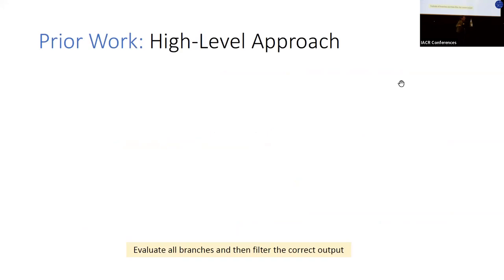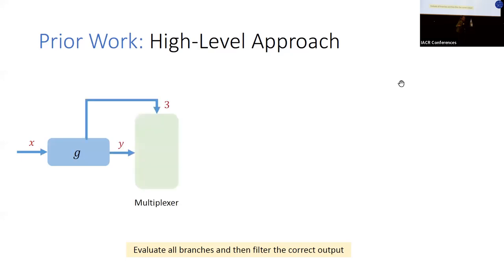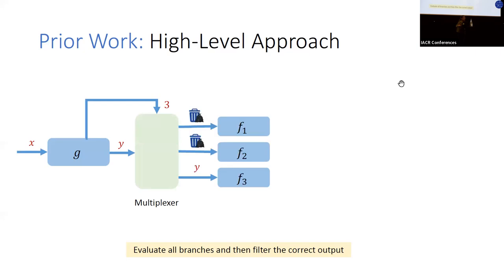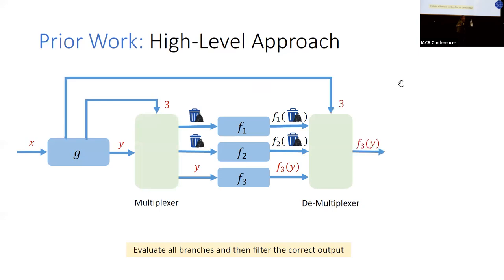All prior works rely on the same high-level idea: enable all parties to evaluate all branches and then filter out the correct output. Given an input, once the index of the active branch is decided — in this case 3 — this value is sent to a multiplexer, which forwards the correct input to the active branch and sends garbage values to the remaining inactive branches. These branches are evaluated on their respective inputs, and the outputs go to a demultiplexer, which filters out the correct output and forwards it to the next step.